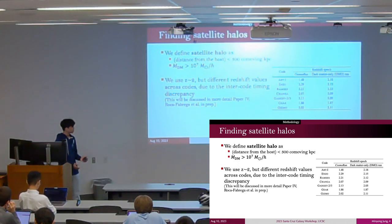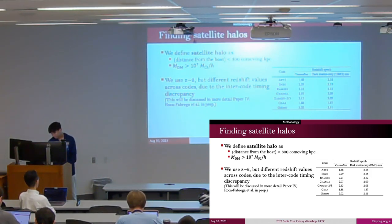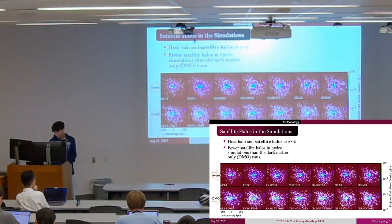Instead, we use slightly different redshift values near z=2 to ensure that all codes are in the same stage in the merger history. We'll discuss timing discrepancies in more detail in Paper 4.